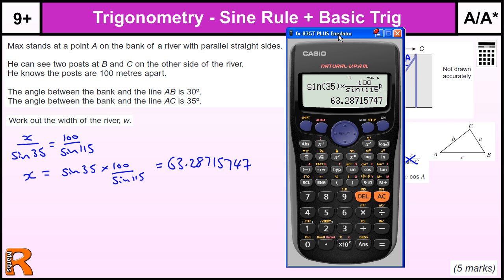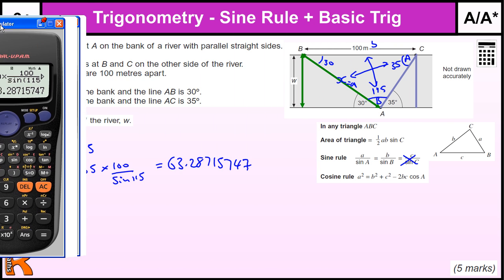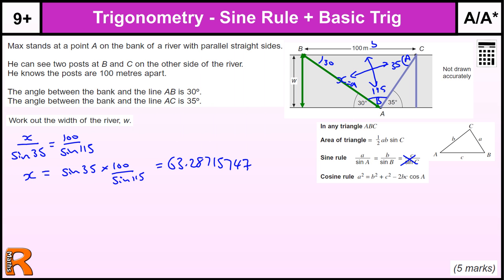So that's the length of that side. I'm going to keep that value in the calculator, because we're going to need it in a minute. Okay, so now we know what X is. I'm just going to write 63 on there, just to give us an idea, roughly what it is.